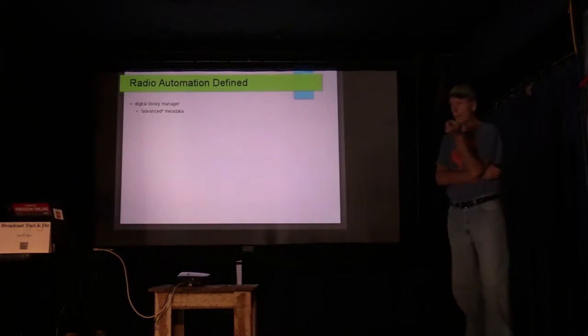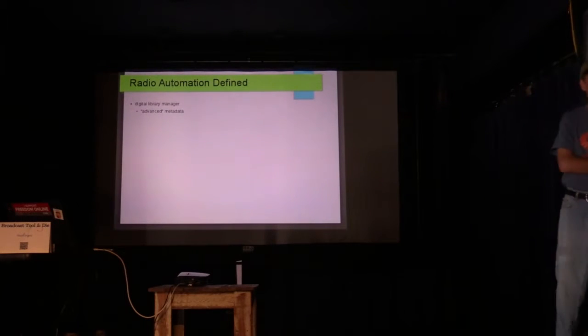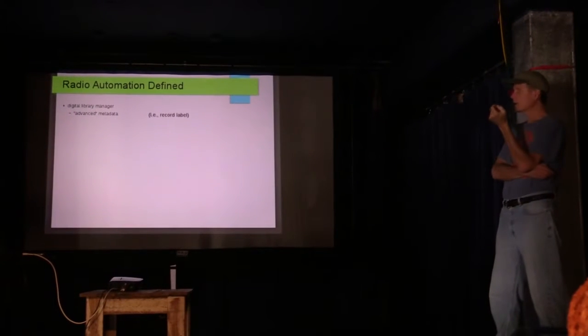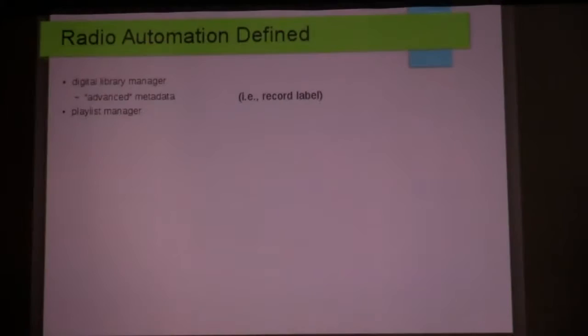Radio automation is a digital library manager at its core, and that includes things like a record label for metadata storage. It's a playlist manager, or in the terminology of Rivendell, a log manager. Old radio stations used to keep a log of everything that went out over the air — they were handwritten and the person on the air had to keep it updated as their shift progressed. That terminology has transferred into some automation systems, including Rivendell. So playlists and logs are synonymous.